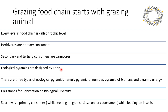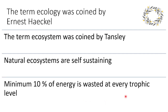Ecological pyramids are designed by Charles Elton. There are three types of ecological pyramids: pyramid of numbers, pyramid of biomass and pyramid of energy. CBD stands for Convention on Biological Diversity. Sparrow is a primary consumer while feeding on grains and a secondary consumer while feeding on insects. The term ecology was coined by Ernest Haeckel. The term ecosystem was coined by Tansley. Natural ecosystems are always self-sustaining. Minimum 10% of energy is wasted at every trophic level.